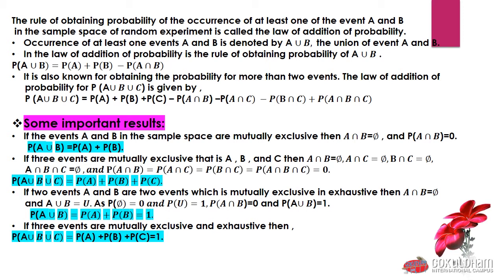Now if our events are both mutually exclusive and exhaustive: exclusive means A∩B = φ, and if A and B are exhaustive then A∪B equals our entire sample space U. So P(φ) = 0 and P(U) = 1, giving P(A∩B) = 0 and P(A∪B) = 1. Substituting, P(A) + P(B) = 1, and similarly for 3 events: P(A) + P(B) + P(C) = 1.